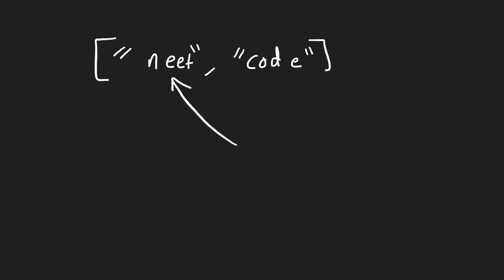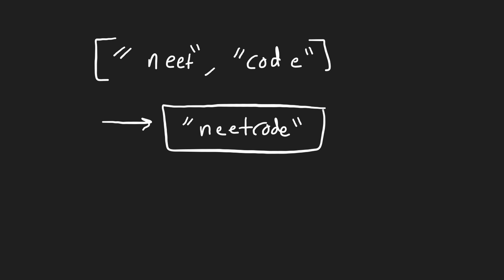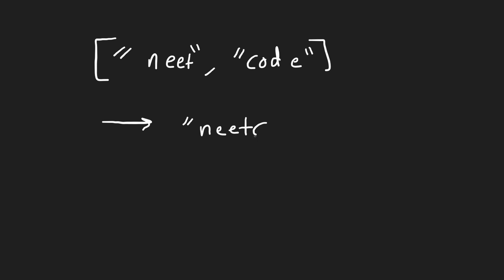Suppose we're given two strings, 'neat' and 'code', and we want to convert them into a single string. A naive way would be to just concatenate them as 'neatcode'. The problem is we can't decode it back — we can't determine where one word ends and another begins. So we need some kind of character to separate words. What if we used a pound sign as a special delimiter? We'd go character by character and whenever we hit a pound sign, we'd know a word ended.